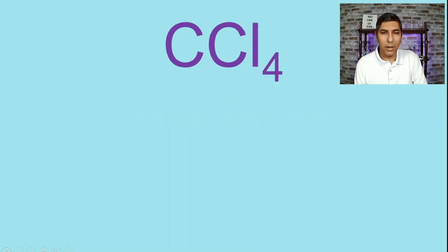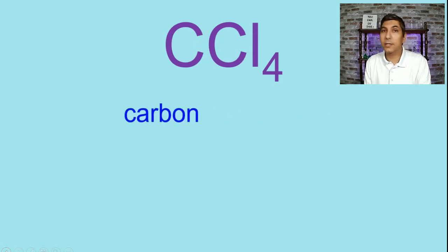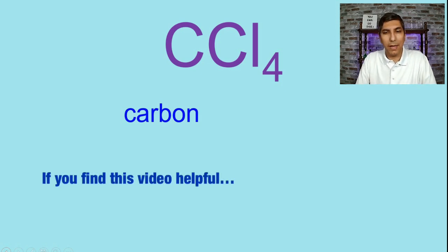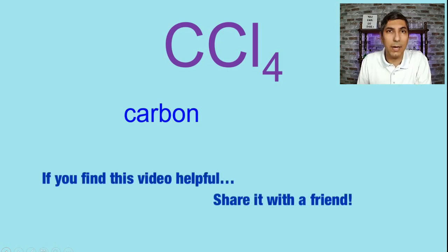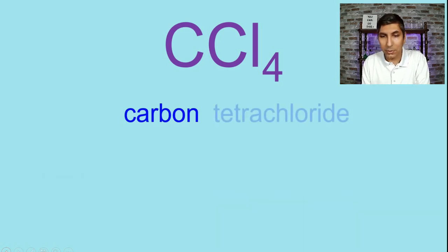Let's take a look at another compound here. We'll have CCl4. Now C is for carbon. Once again, we don't put mono on the front of the name of a compound. And then we have four chlorine atoms. So that's tetrachloride. So it's carbon tetrachloride for this one.